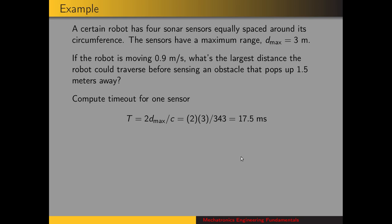Let's start by computing the timeout for one sensor. This is the amount of time that the sensor will wait for a reflected wave. And this is given by two times the maximum range divided by the speed of sound. So we have two times three meters divided by 343 meters per second. So 17 and a half milliseconds is the maximum amount of time that a sensor will wait between transmission and returning a value. So it will return a value of three meters after 17 and a half milliseconds.